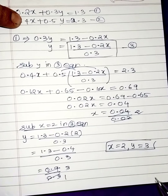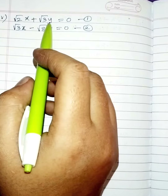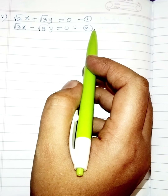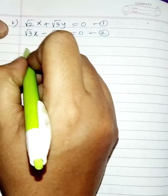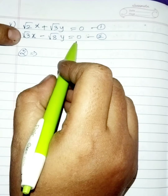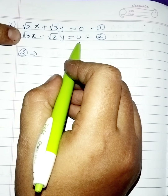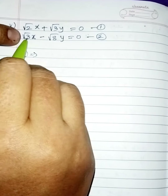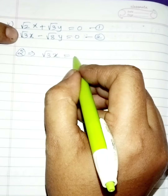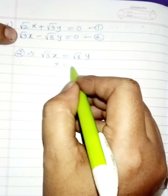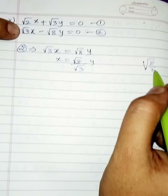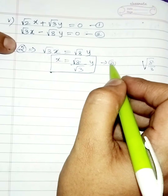Fifth subdivision: √2·x plus √3·y equals 0, and √3·x minus √8·y equals 0. Choose the second equation and find x. Since x is not inside a root, this remains linear. Taking the minus √8·y term: √3·x equals √8·y, so x equals √(8/3)·y. Mark this as the third equation.